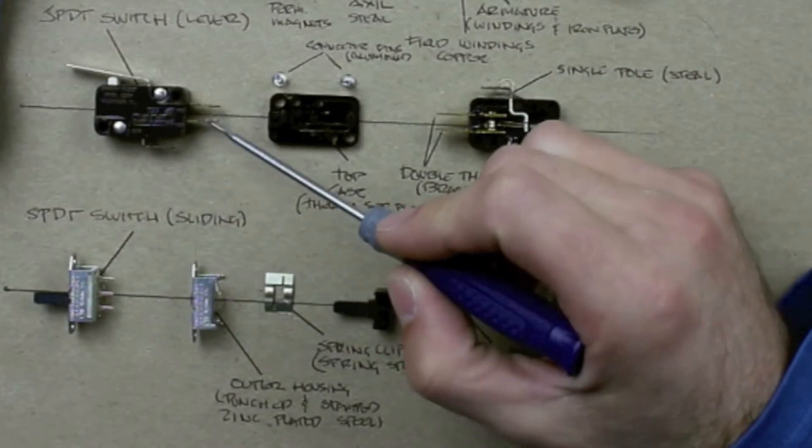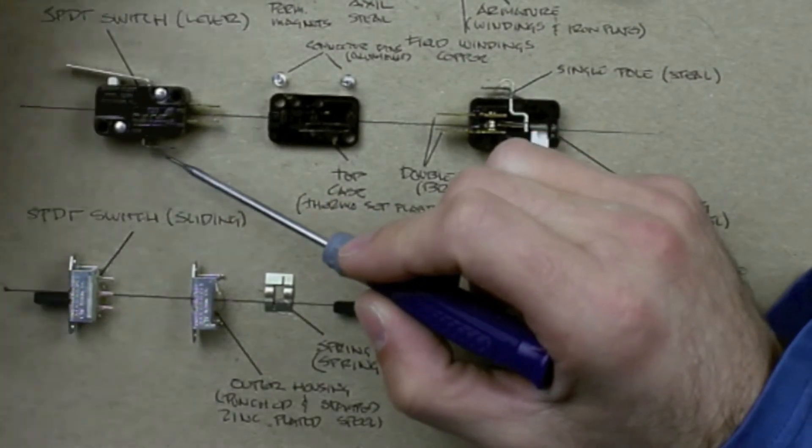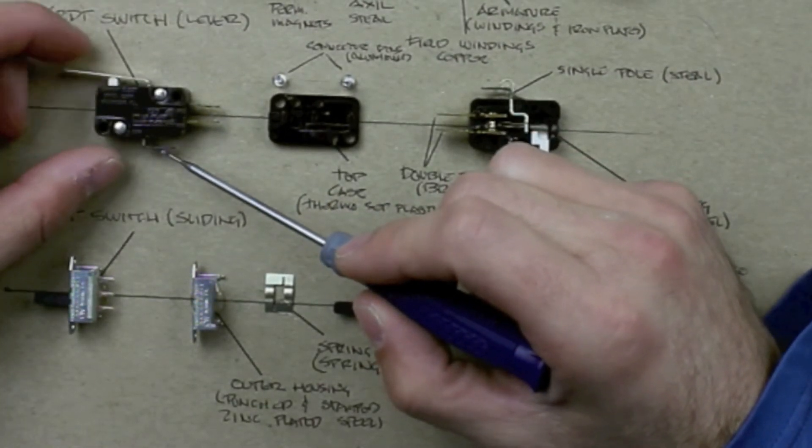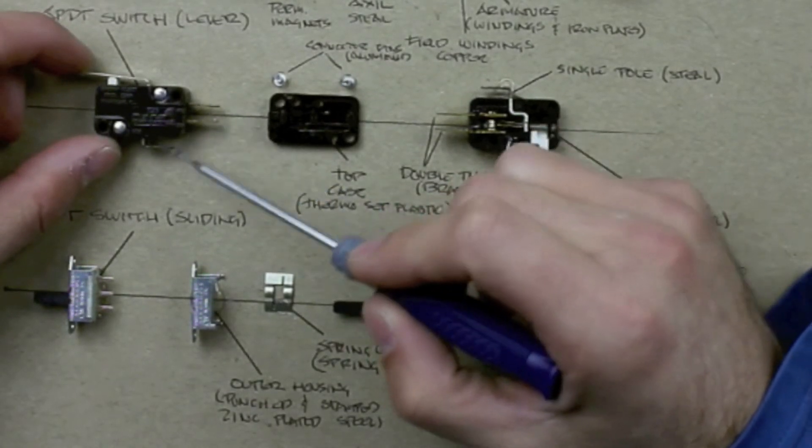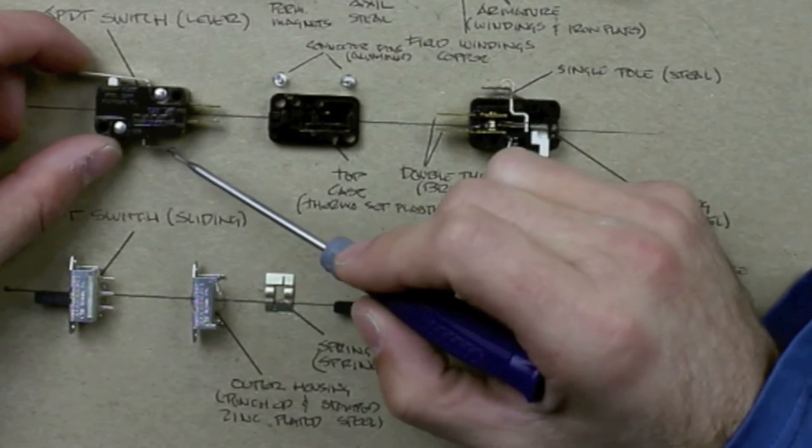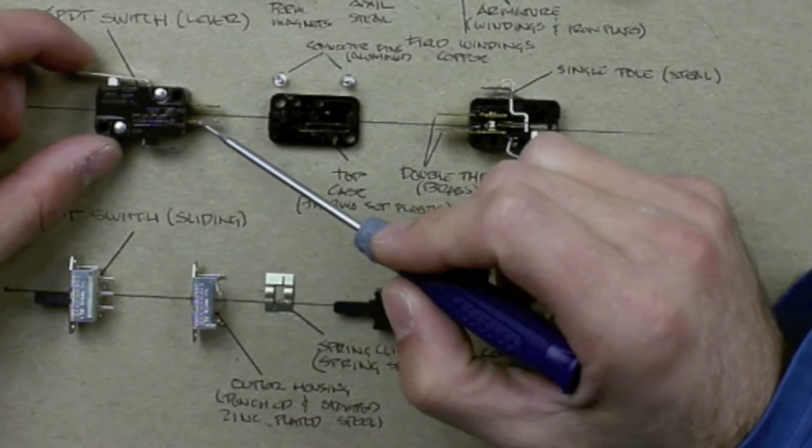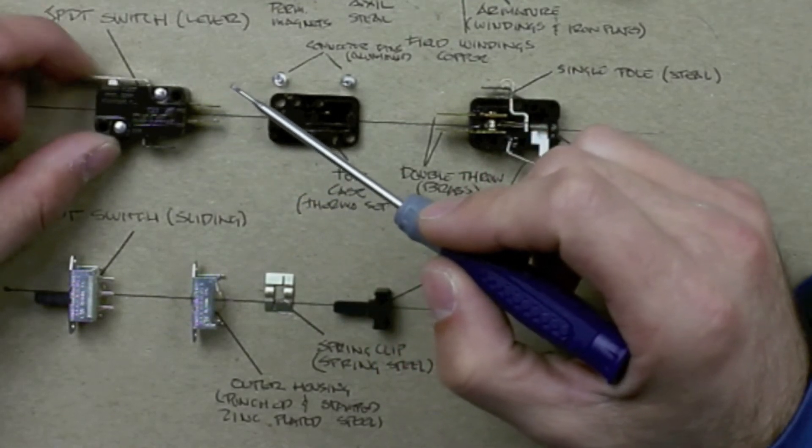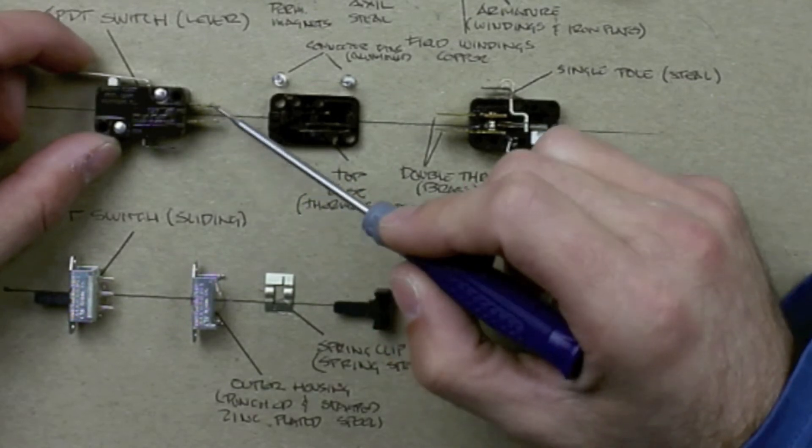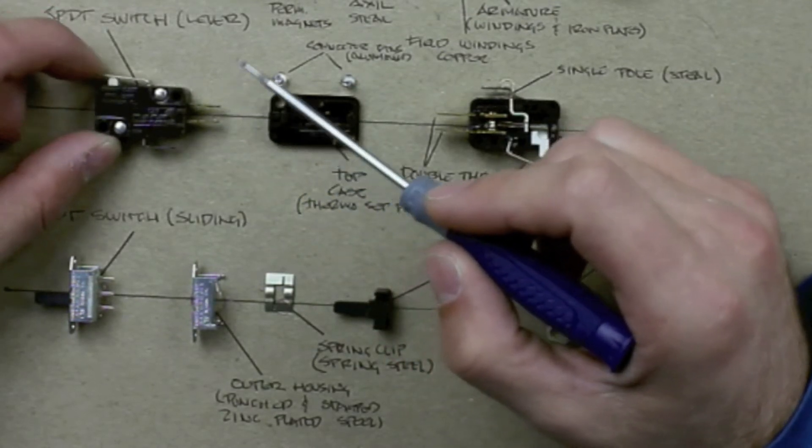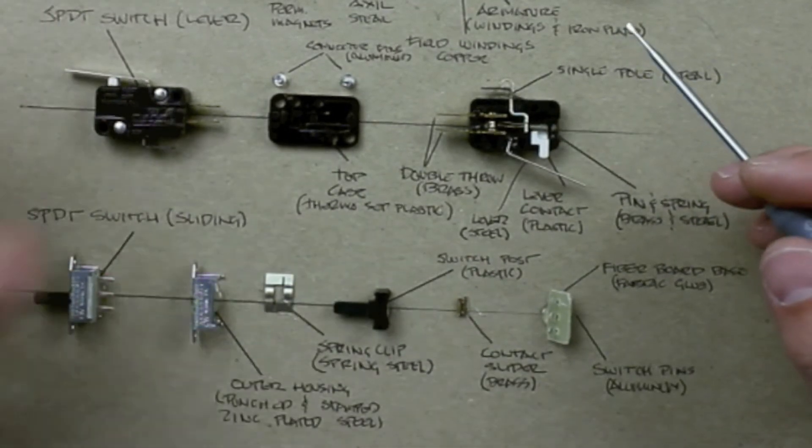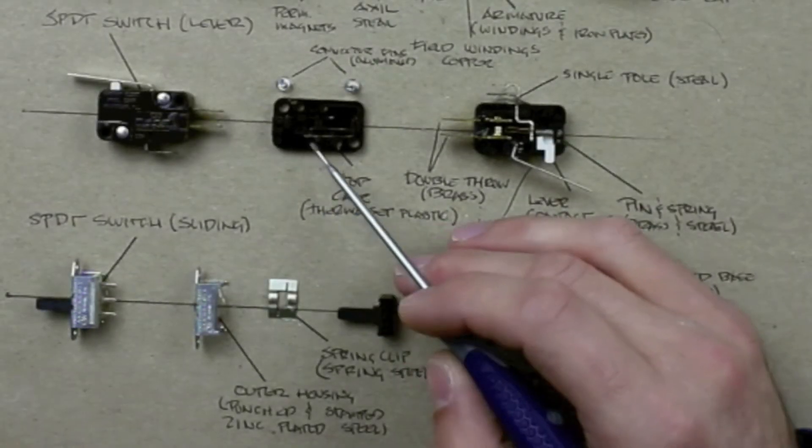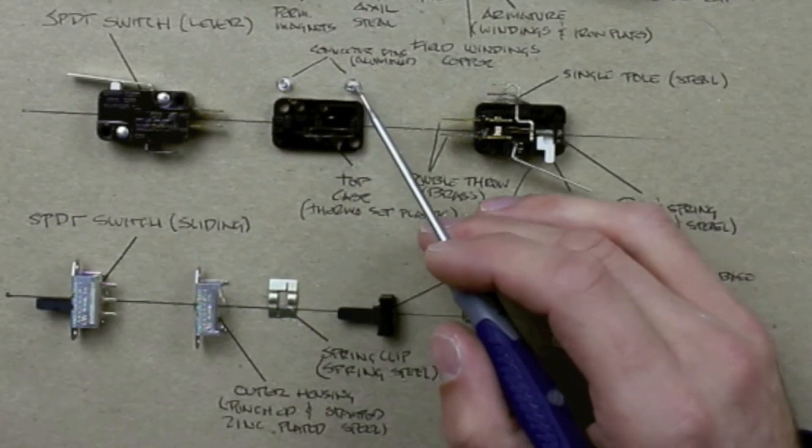Now we're going to talk about our single pole double throw switch. It's a lever switch. You can see there's a lever there, and that makes it easier to trigger the switch. There's one pole and two throws. What's unique about this switch is when it has one pole and two throws, you can set it up to either turn a light on when you push it or turn a light off when you push it. It just depends on which throw you connect to.